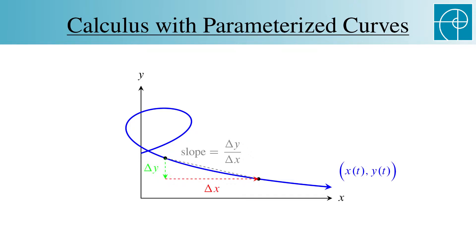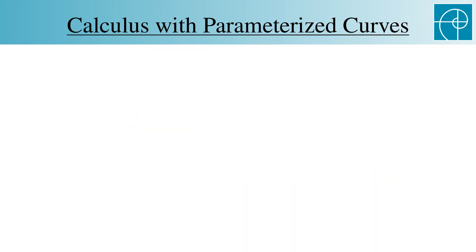What we really want isn't delta y over delta x, but dy over dx. So we'll take a limit. The slope of the tangent line at t is this limit, as delta t goes to 0.